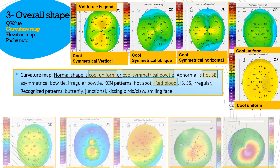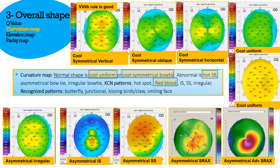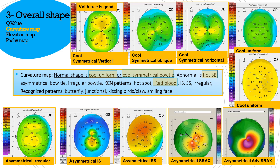Now we come to the abnormal patterns. This is an asymmetrical bow tie. This one is a bow tie that is asymmetrical and hot. This is also an asymmetrical bow tie, and this is an asymmetrical bow tie with a tilt on one side — what we call thrax — and this is an advanced thrax. So these are all abnormal patterns suggestive of keratoconus. Remember, the normal pattern is cool symmetrical bow tie and cool uniform; the rest are mostly abnormal.